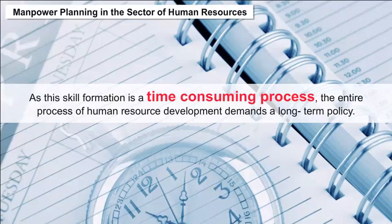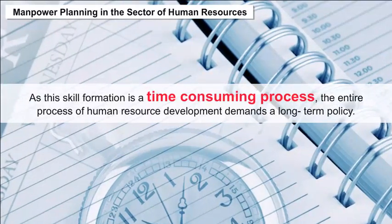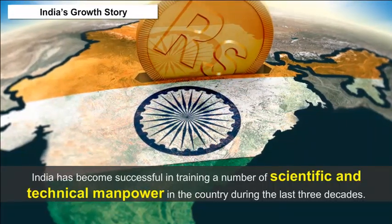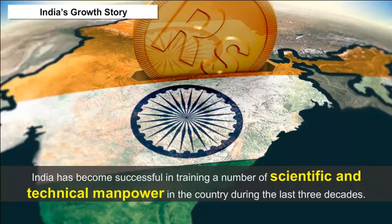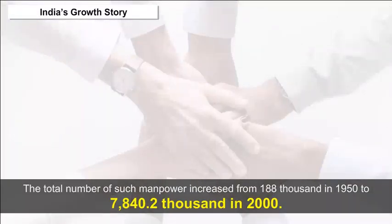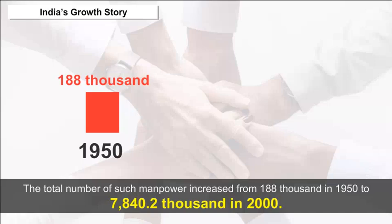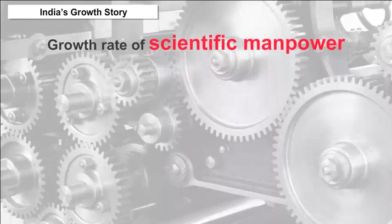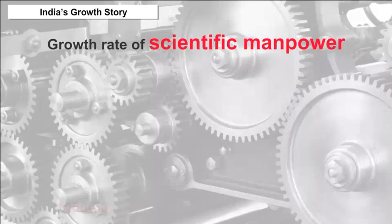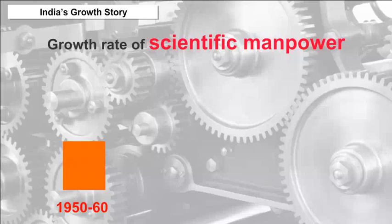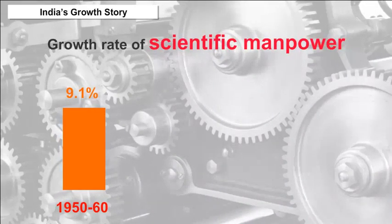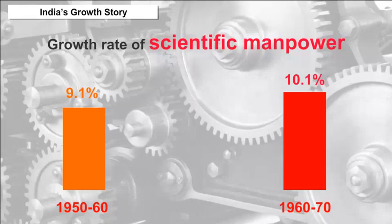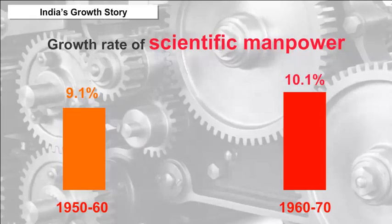India's Growth Story: India has successfully trained a number of scientific and technical manpower over the last three decades. The total number of such manpower increased from 188,000 in 1950 to 7,840,200 in 2000. The growth rate of scientific manpower during 1950–60 was 9.1% per annum, rising to 10.1% during 1960–70, a decade that saw huge expansion of basic and heavy industries in India.